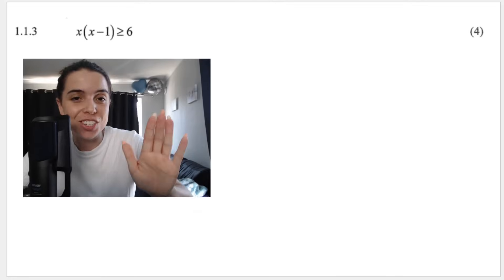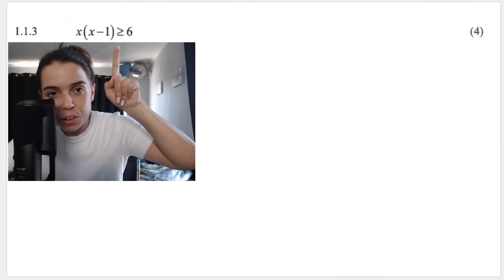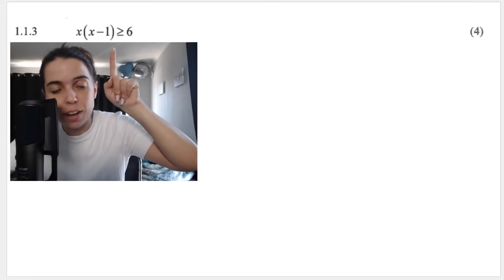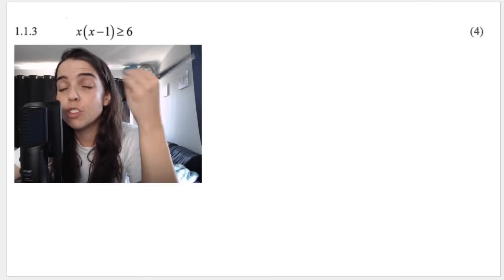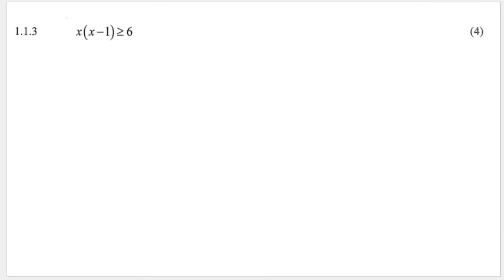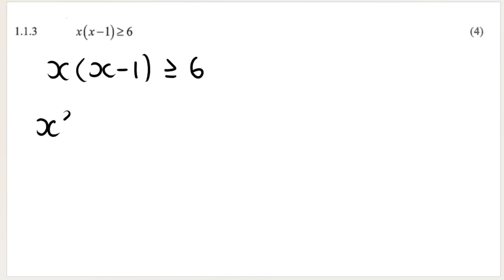A lot of students struggle with the next question. This is an inequality — we have a greater than or equal to sign, not an equal sign. This is a quadratic inequality. We need to get it into standard form, so we distribute the x into the bracket: x squared minus x, bigger than or equal to 6. Then the inverse operation of plus 6 is minus 6, giving us standard form equal to zero. Remember also the descending powers of x.